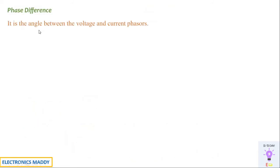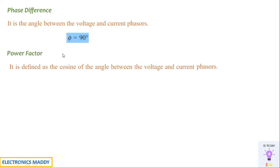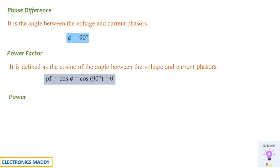The phase difference between the voltage and current phasors is 90°, as already discussed — current leads voltage by 90°. The power factor is the cosine of the phase difference, so power factor = cos 90° = 0. Ideally, the power factor for a purely capacitive load is zero, though practically there may be small deviations based on leading or lagging power factor effects.